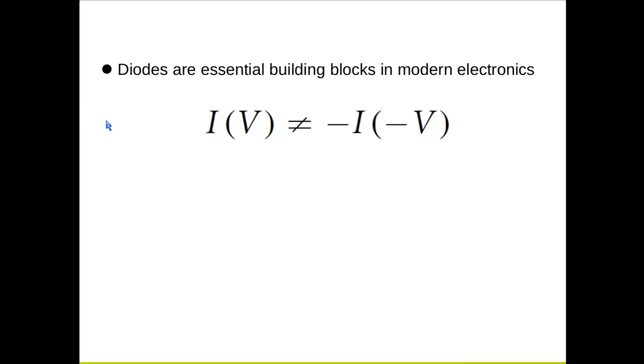Diodes are essential building blocks in modern electronics, where the electric current as a function of the voltage bias shows strong asymmetry called rectification. When we apply positive voltage, the current shows strongly nonlinear curves, whereas it almost vanishes with negative voltage.